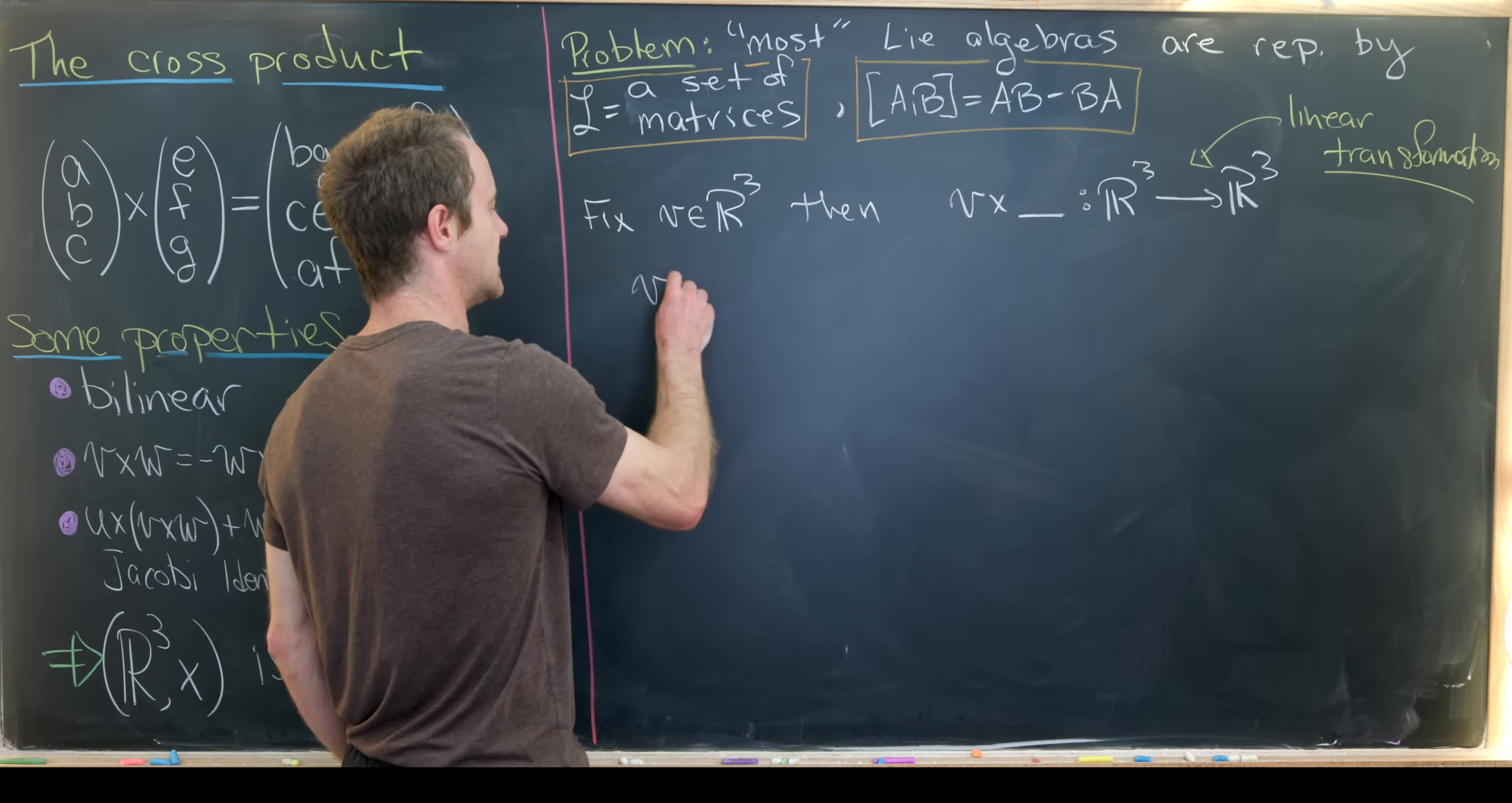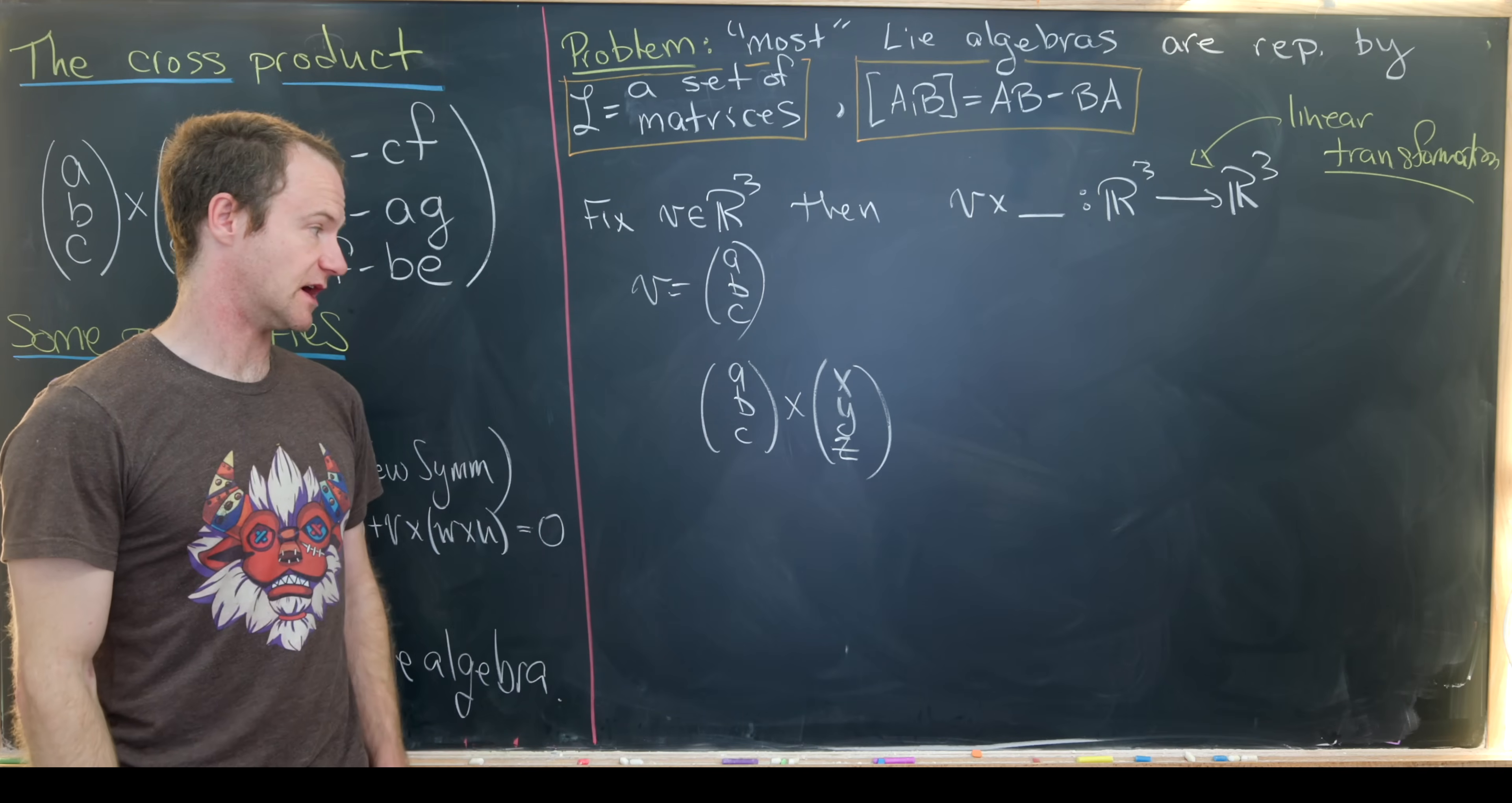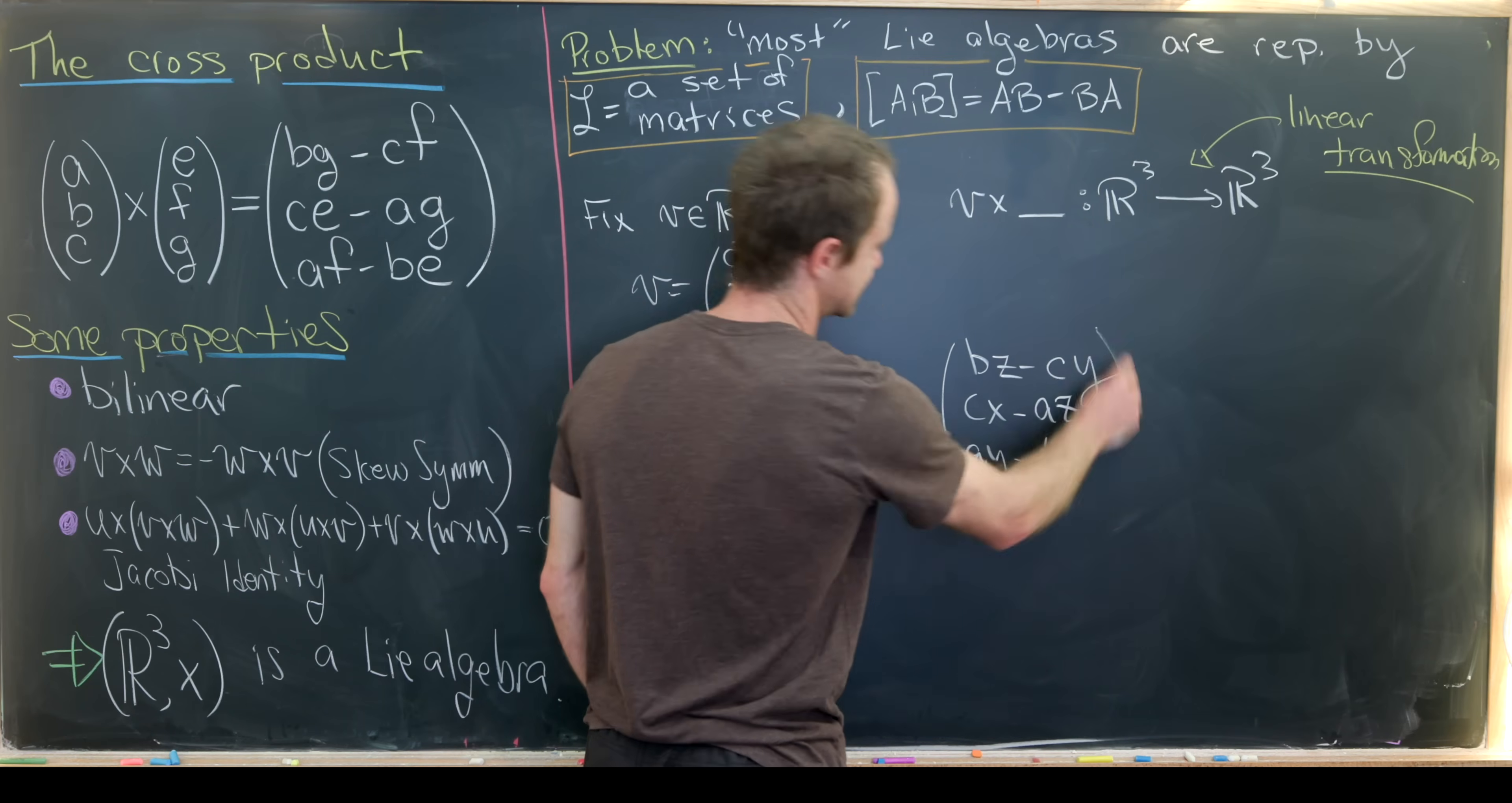So let's maybe say that V is equal to the matrix ABC just to get started. And then we want to look at the cross product of V with an arbitrary vector. So let's maybe call that arbitrary vector XYZ. So we're looking at the cross product of ABC with XYZ.